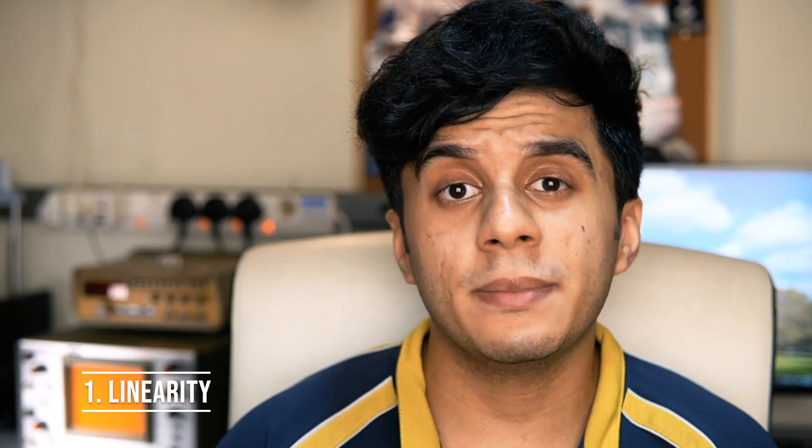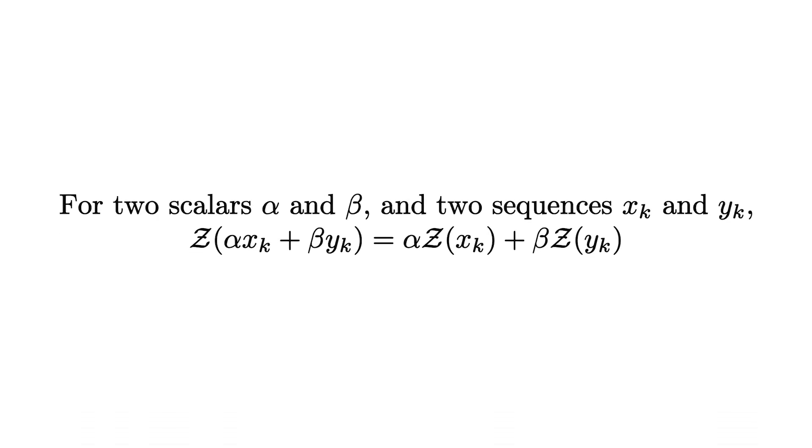Now let's talk about some useful properties of the Z-Transform. I'm just going to state the properties without going into the proofs — this video would be very long and boring if I did — but you can Google the proofs if you're interested. The first property is linearity. The Z-Transform is linear, just like the Laplace transform. So for two scalars alpha and beta and two sequences xk and yk, the Z-Transform of (alpha·xk + beta·yk) is just alpha times the Z-Transform of xk plus beta times the Z-Transform of yk.